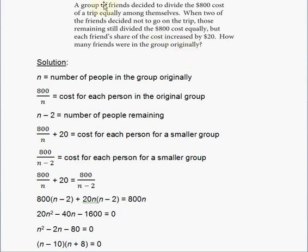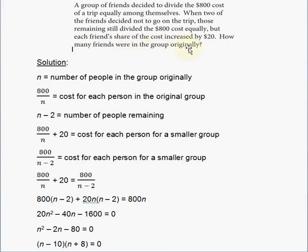A group of friends decided to divide the $800 cost of a trip equally among themselves. When two of the friends decided not to go on the trip, those remaining still divided the $800 cost equally, but each friend's share of the cost increased by $20. How many friends were in the group originally?